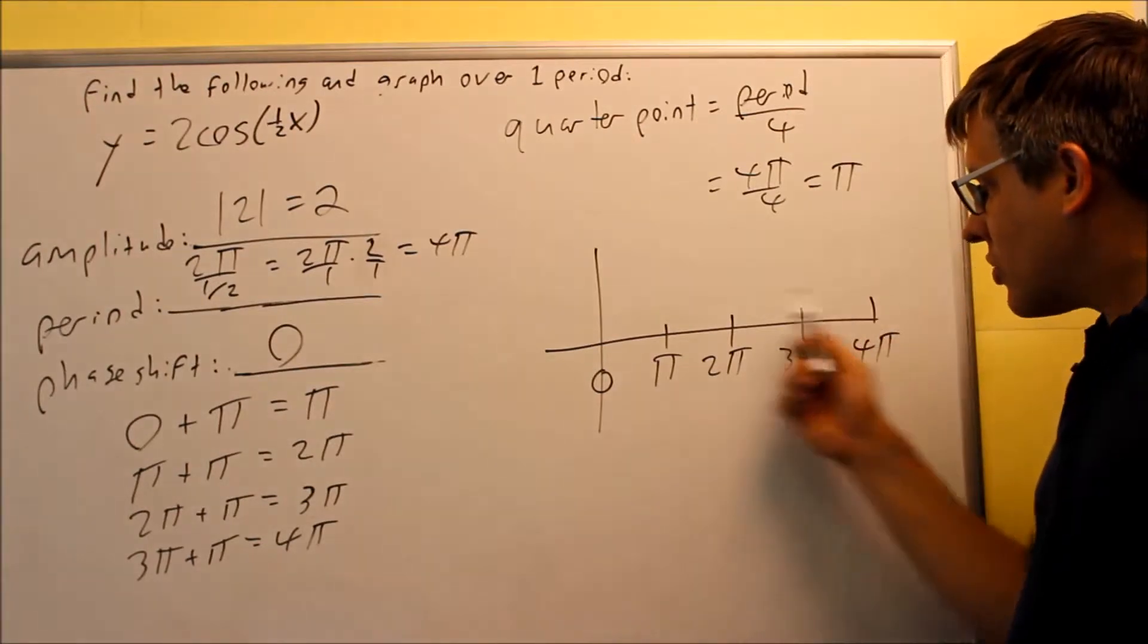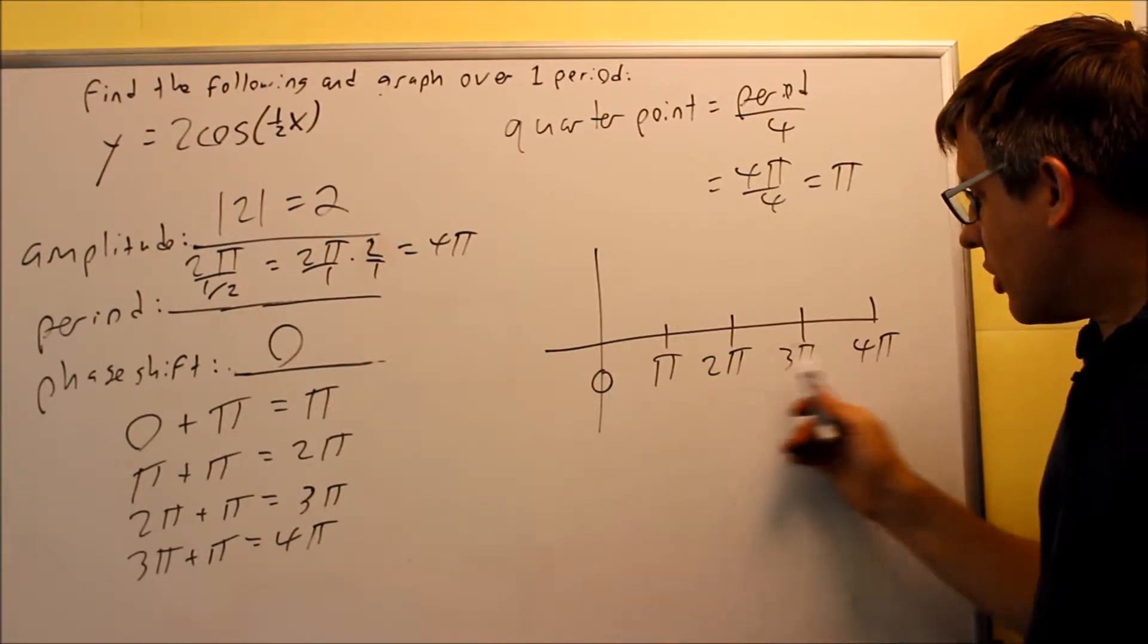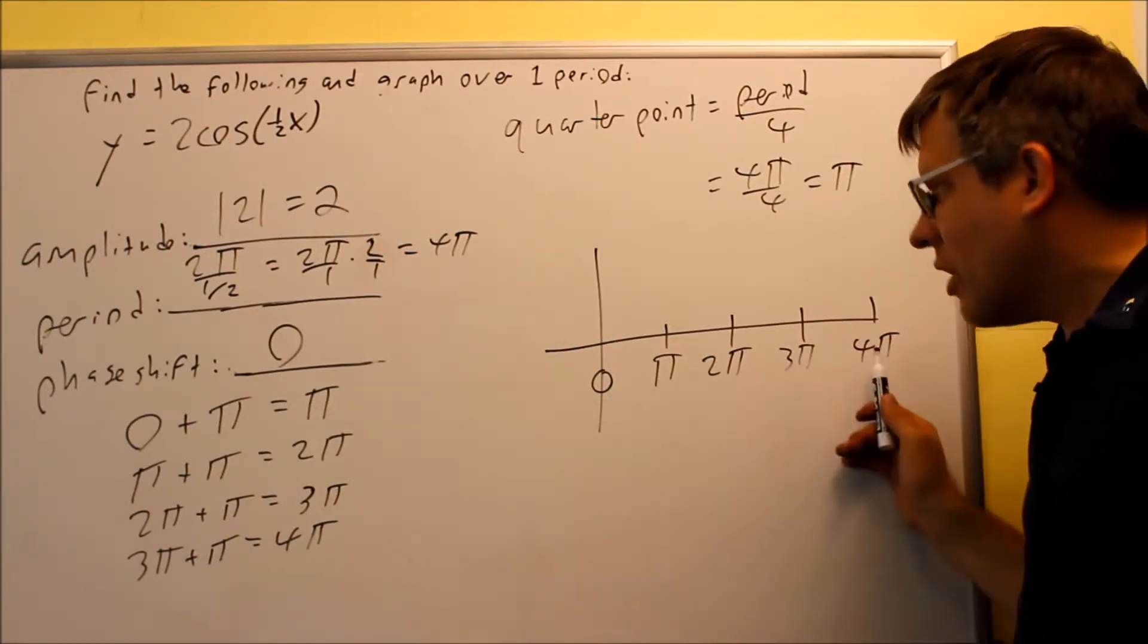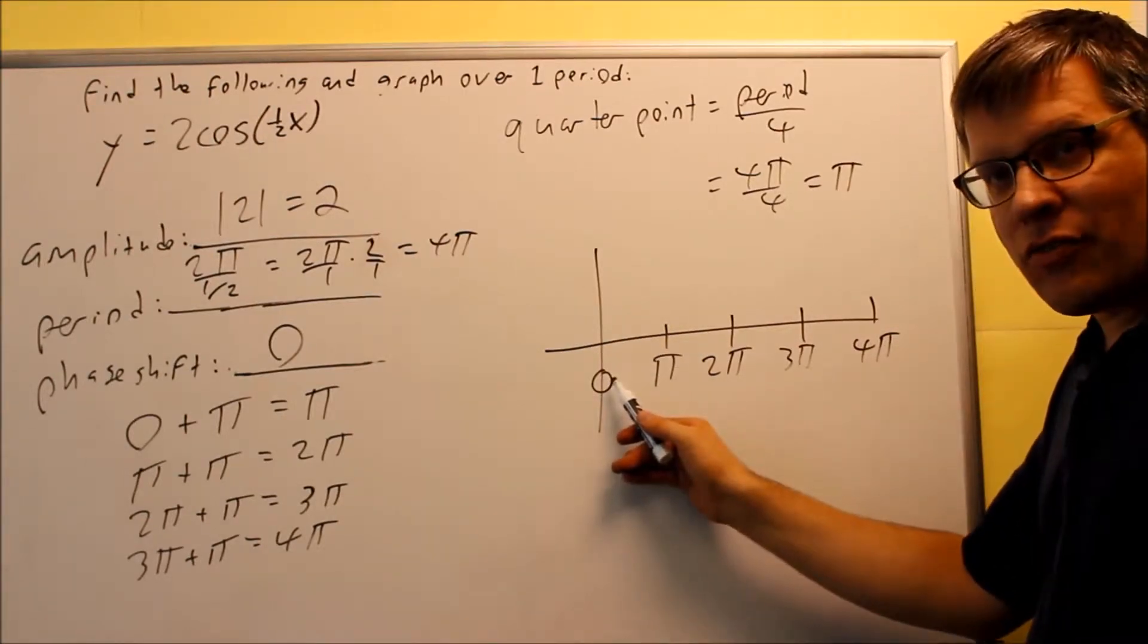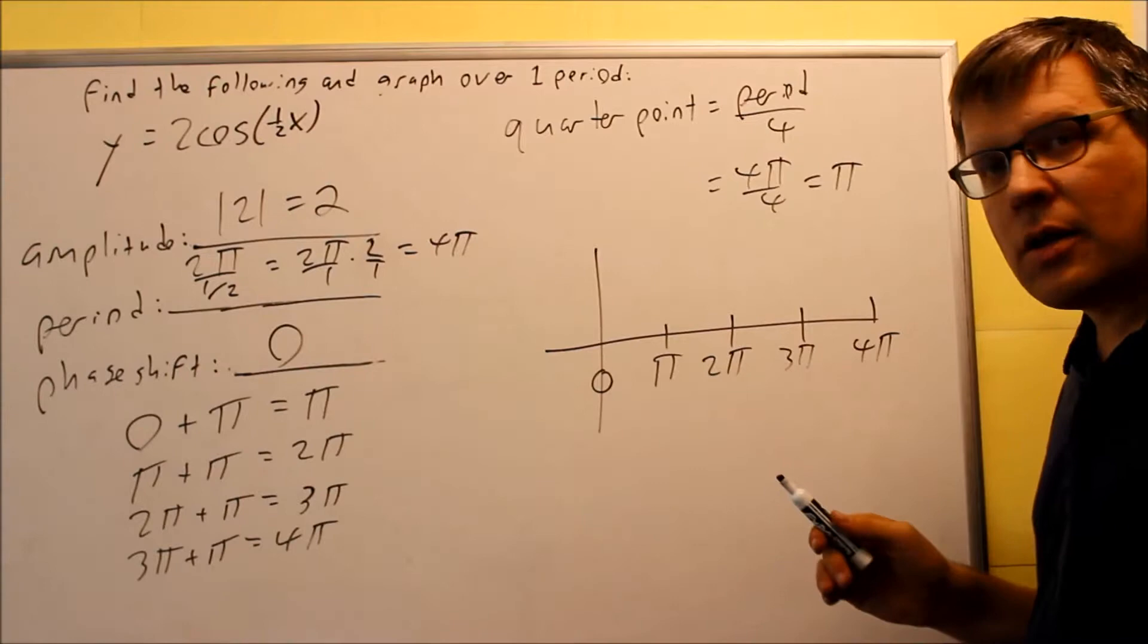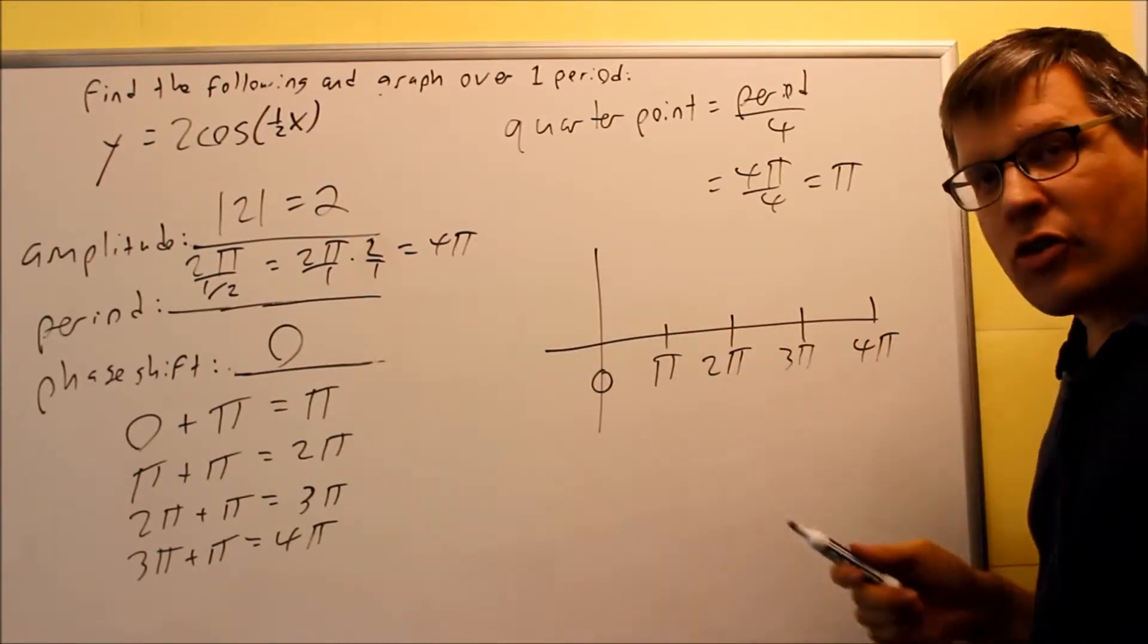These are all our key points. The distance from 0 to 4π, that whole distance there, that is my period. So I can always take the last one, subtract the first number, I should always end up with my period there, and I do, I get 4π. Now these are all the correct key points.